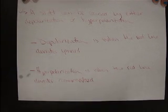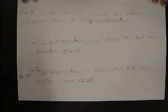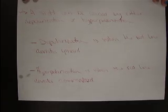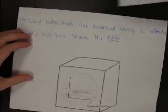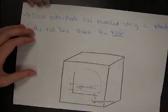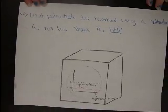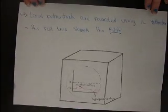A shift can be caused by depolarization or hyperpolarization. Depolarization is when the red line deviates upward. Hyperpolarization is when the red line deviates downward. Local potentials are recorded using a voltmeter.